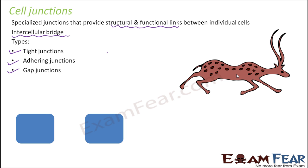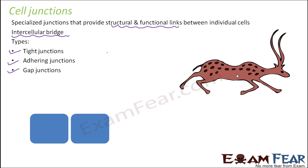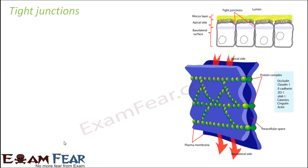Suppose these two blue blocks represent two cells. If they are loosely connected, there is leakage between them and foreign particles can enter. That is why we have cell junctions — to tightly seal the junction so that no foreign particle can pass through.